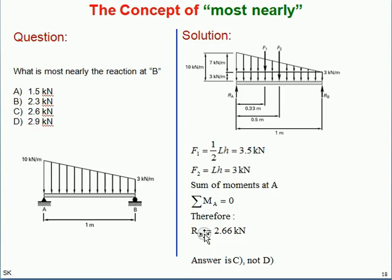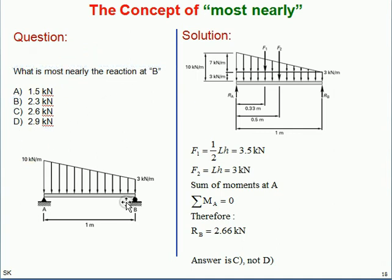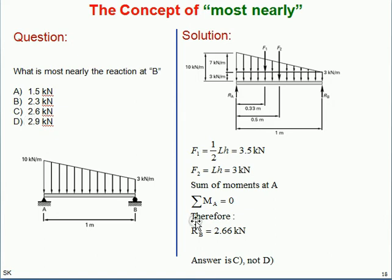Here is an example: 'What is most nearly the reaction at B?' You calculate the reaction and get 2.66 kilonewtons. The choices are clearly not A or B — it's between C (2.6) and D (2.9). Because this is an analysis problem, you simply choose the answer closest to your calculated value, which is 2.6, so the answer is C.